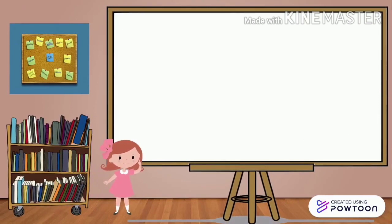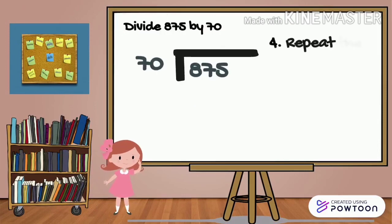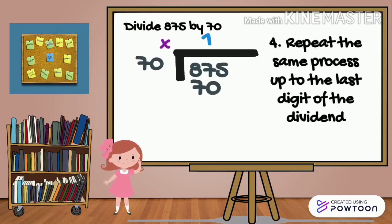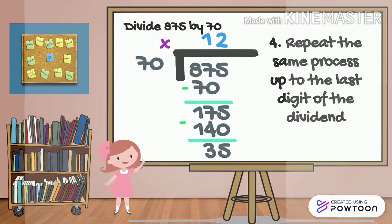And for the last step, we're going to divide 875 by 70. So repeat the same process up to the last digit of the dividend. Okay, so 175 divided by 70. So how many 70? 175. There are 2. 2 times 70 is 140. Subtract. 35.